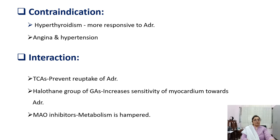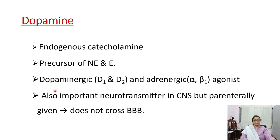Contraindications of adrenaline: hyperthyroidism (more responsive to adrenaline), angina, and hypertension — it should be avoided as it precipitates these conditions. Drug interactions: tricyclic antidepressants prevent re-uptake of adrenaline; halothane group anesthetic agents increase sensitivity of the myocardium to adrenaline; MAO inhibitors impair metabolism, increasing the concentration of adrenaline at the site of action.